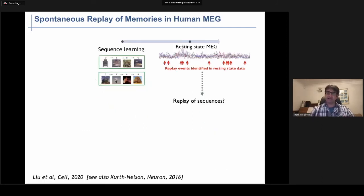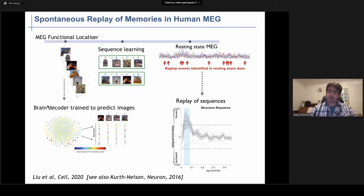Recently, it's been shown that we can identify replay non-invasively in humans using MEG. Rather than having humans run around a maze, we have them learning sequences of visual images during a behavioral part of the experiment. We also have to pre-learn a brain decoder that can identify from the MEG data what visual images are being represented at any one point in time. That's done with some MEG functional localizer data. Once we have this pre-trained brain decoder, we can apply it to the resting state MEG data after the sequence learning and find if there's reactivation of the learned sequences, in other words, replay. And it's been shown that this is the case. You can find replay significantly and it's been replicated now in a couple of studies.